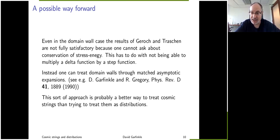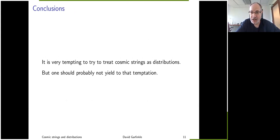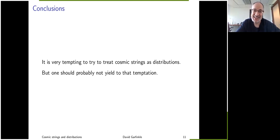For domain walls, one can instead use the method of matched asymptotic expansions, having one description within the wall and another for the exterior spacetimes on either side, matched consistently. That treatment is contained in an old paper with Ruth Gregory. For cosmic strings, matched asymptotic expansions, while more complicated than the distribution approach, is probably the better way to go in full general relativity. The conclusion is that it's very tempting to treat cosmic strings as distributions, and while that works fine in linearized gravity, it doesn't work in general relativity — one should probably not yield to that temptation.